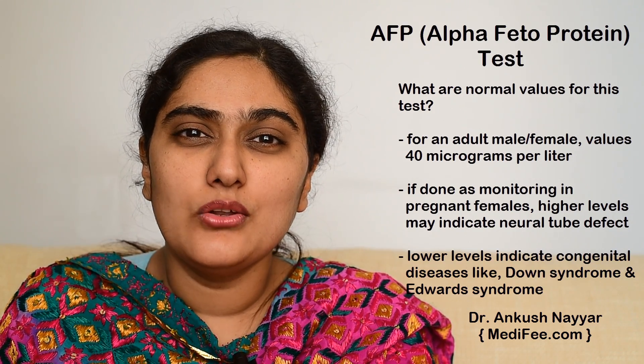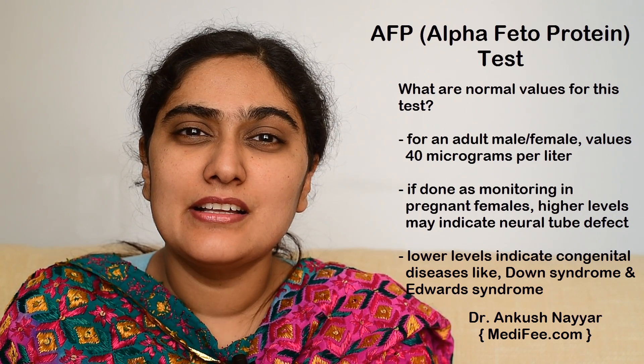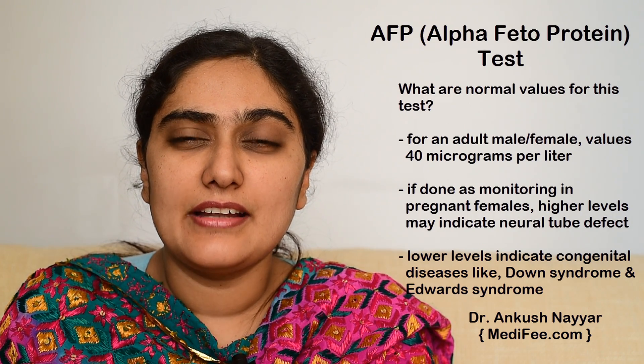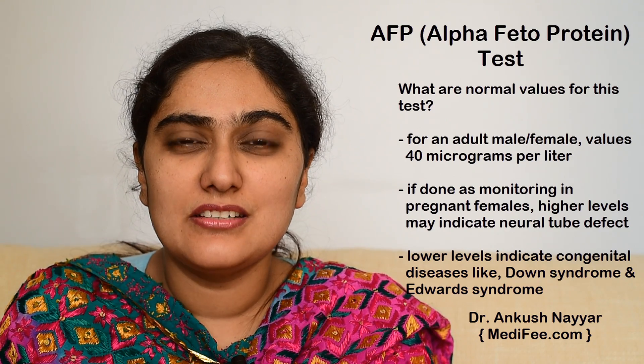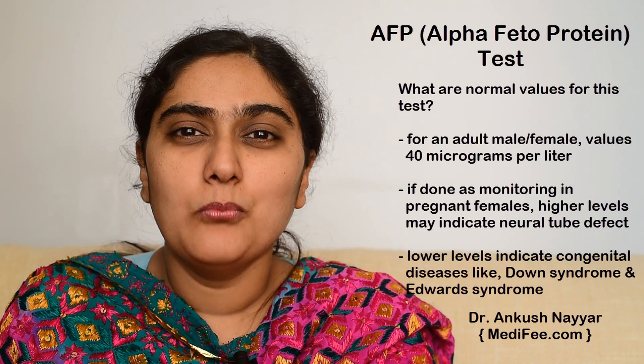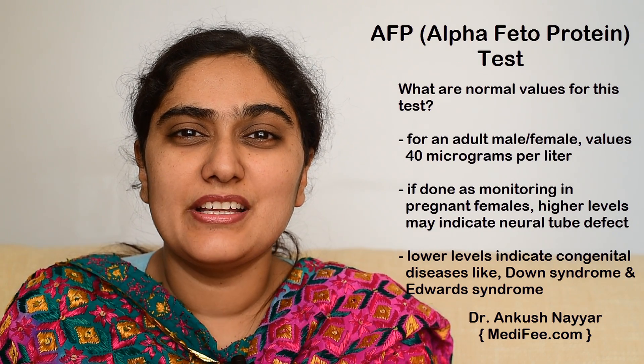On the other hand, lower levels may indicate congenital diseases like Down syndrome or Edwards syndrome. But more commonly, the causes of deranged alpha phytoprotein in pregnancy are just abnormal dating of pregnancy.